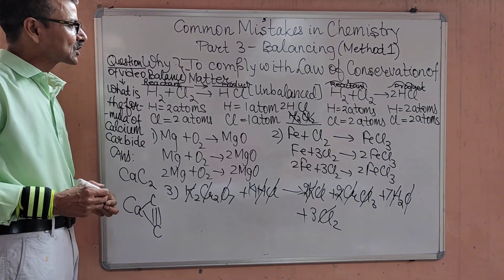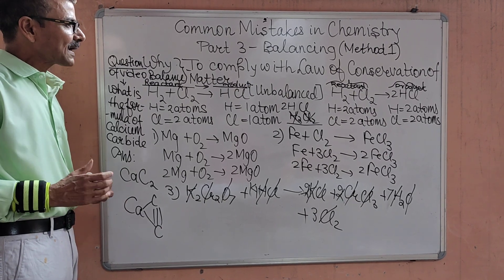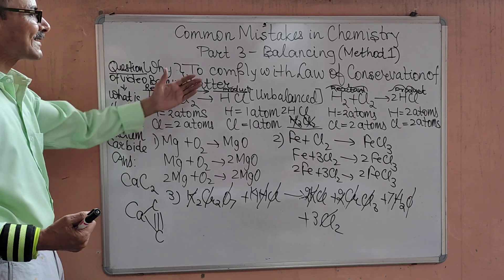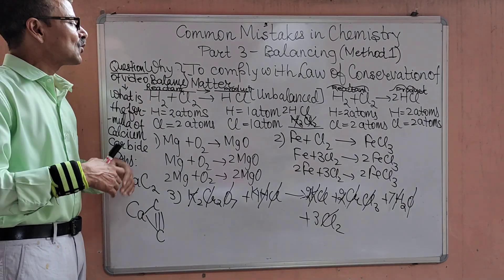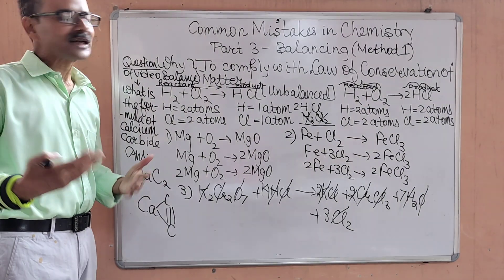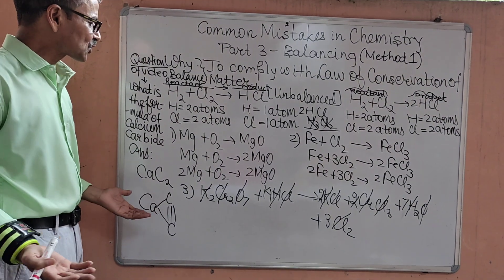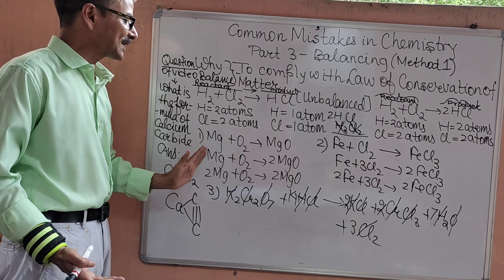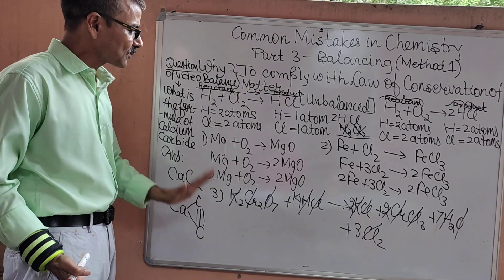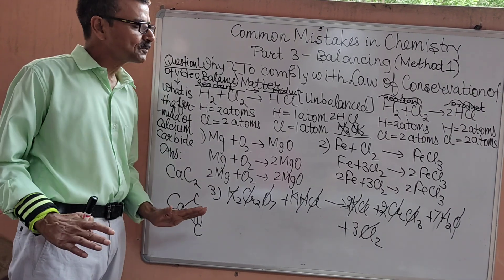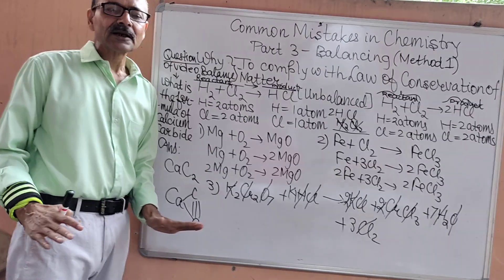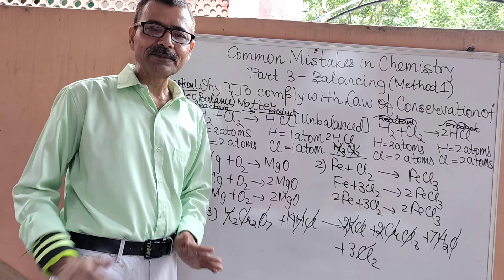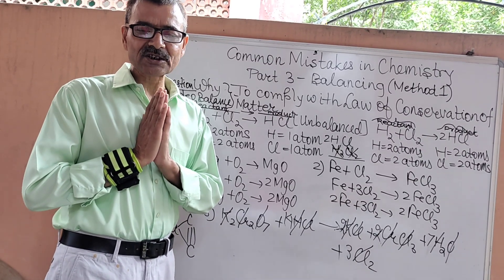So here I am about to conclude the balancing method 1, and here why we balance? To comply with the law of conservation of matter. What is the law of conservation of matter? That atoms can neither be created nor be destroyed. We simply multiply the molecule from outside. We never change the molecular formula. So with this I hope you are clear about the balancing. Please subscribe my channel for coming updates. Thank you very much for watching. Thank you chemistry lovers.